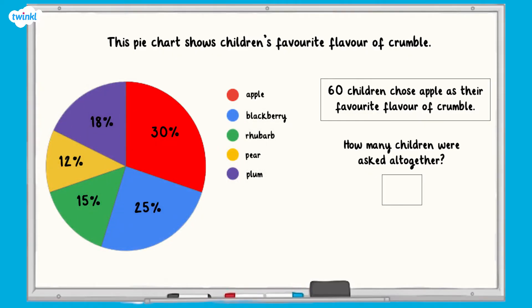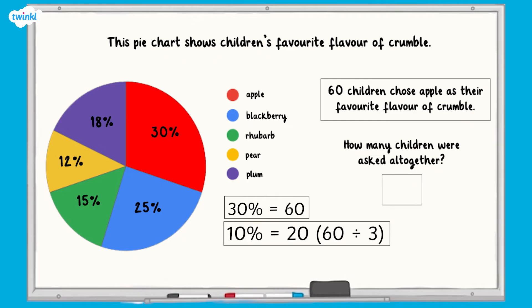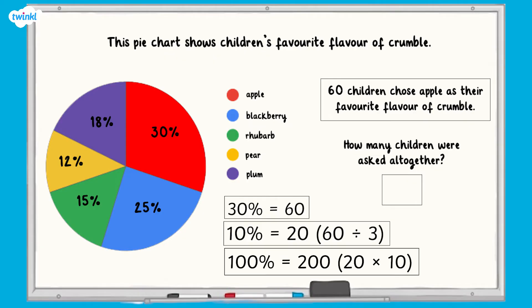Therefore, 30% of the total number of children is 60. If we know that 30% equals 60, how can we work out 100%? First, we can work out that 10% is 60 divided by 3, which is 20. Then, we multiply this by 10 to get 100%, because 10 times 10 equals 100. 20 multiplied by 10 is 200. So 100% must represent 200 children.